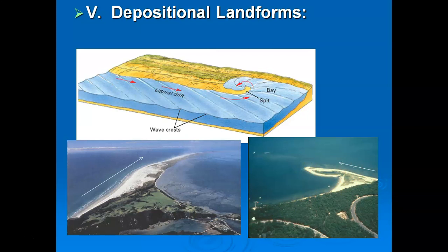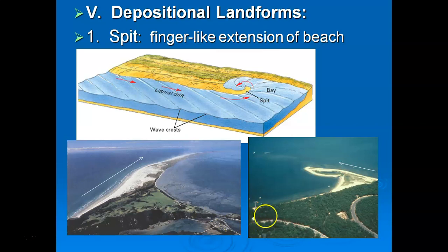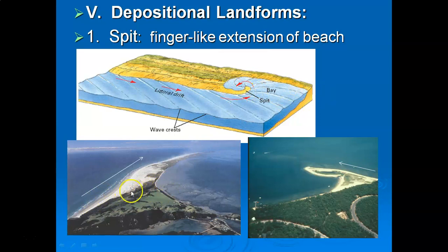Eventually all that sand moving along the coast by littoral drifting gets deposited in areas of quiet water. The first depositional landform is a spit or sand spit — a finger-like extension of the beach. When the land ends, the littoral drifting continues and sand is deposited in the quieter waters beyond. Here's a beautiful example of a spit where the land ended but littoral drifting continued, and here's another example of a growing sand spit with sand bodies visible below the water level.